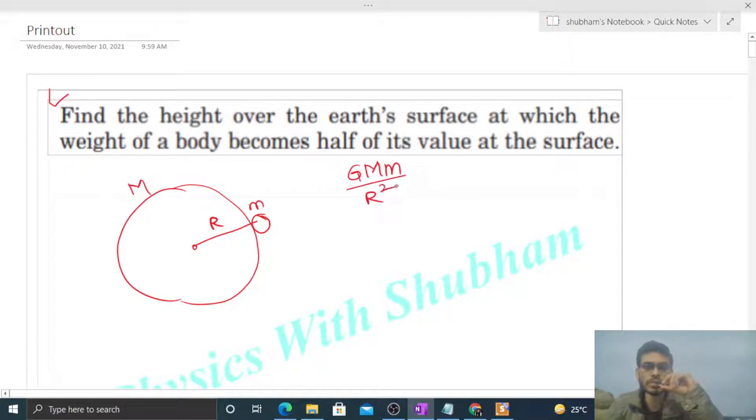Let's say the body goes to some height h from the surface of earth. Then what will be the gravitational force of attraction by the earth on this body? That will be capital G capital M small m divided by r plus h square.